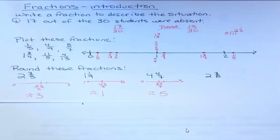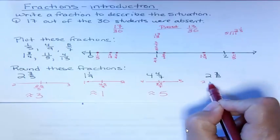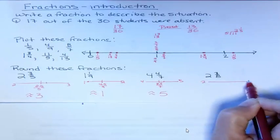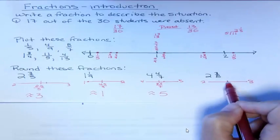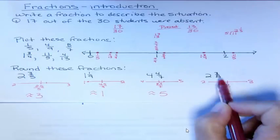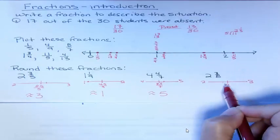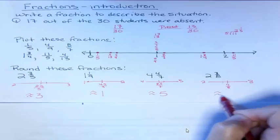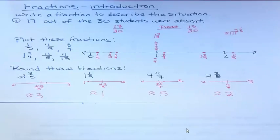And the last one, two and three-eighths. Is three-eighths closer to two or three? What would half of eight be? Half of eight would be four-eighths, and we have less than that, so we're on this side, and so we would say that that's approximately two. So when you want to round a fraction, round a mixed number, you just decide, is the fraction going to take me up to the next number or down to the previous number?